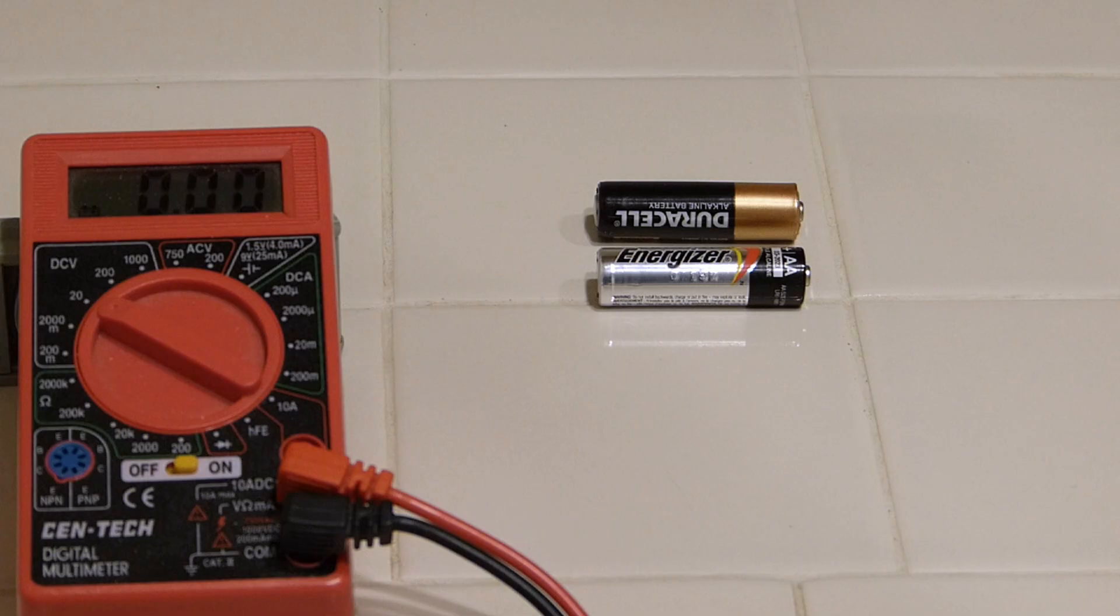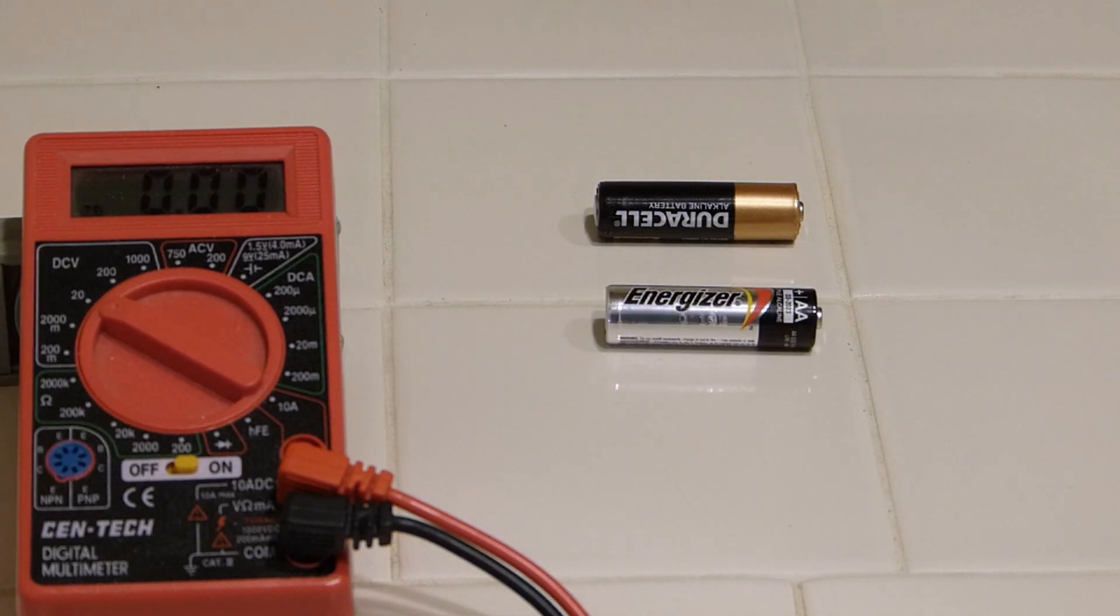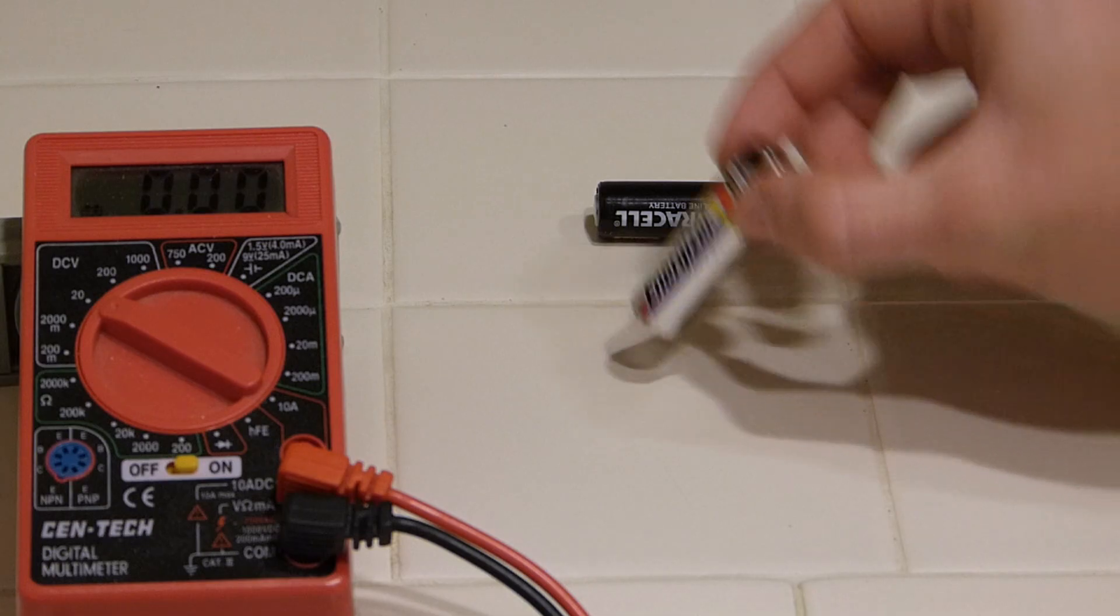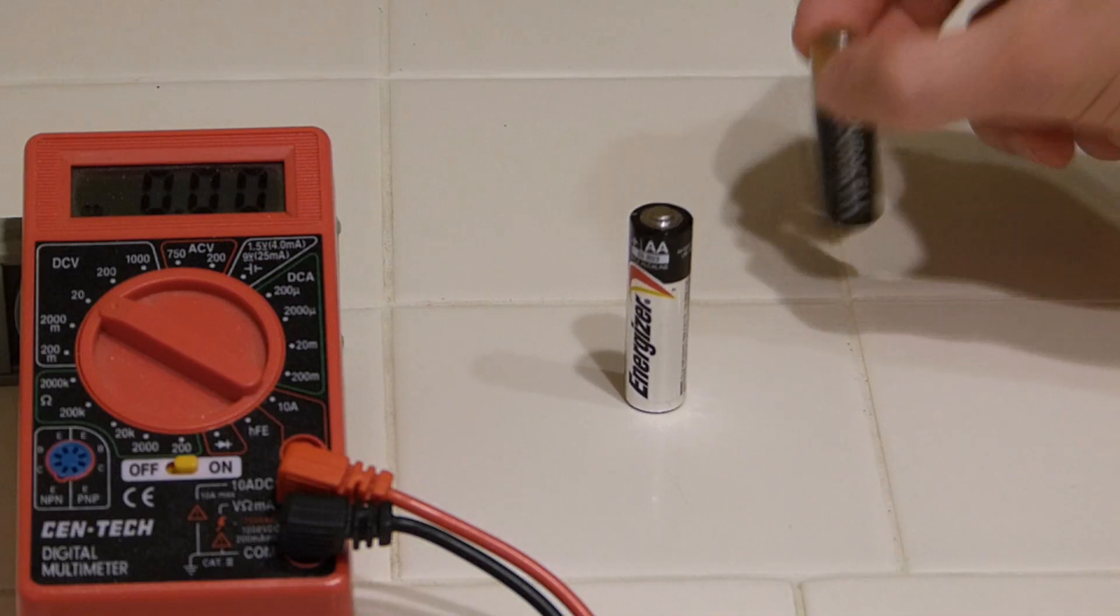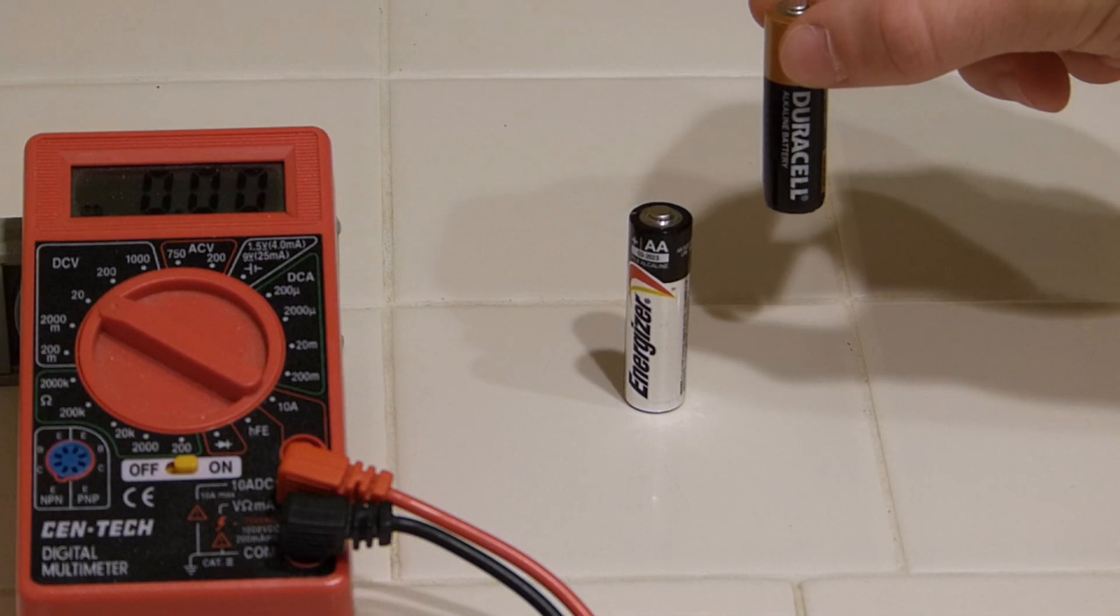Without a meter, how could we tell the difference? With a simple bounce test, a good battery will not bounce and it will end with a thud and frequently stand up. A bad battery will take several bounces and usually fall over.